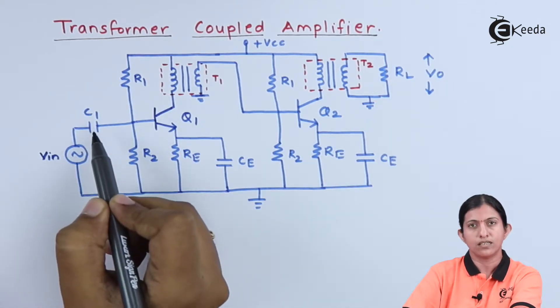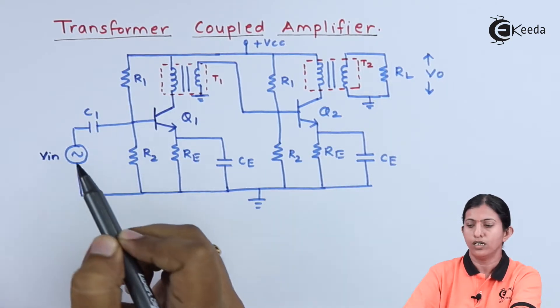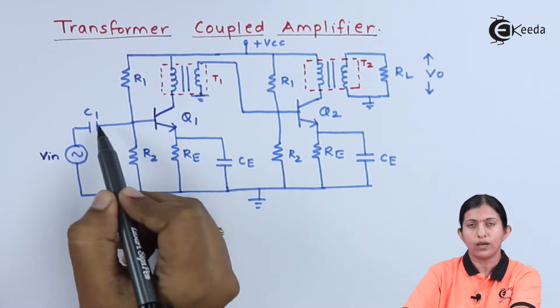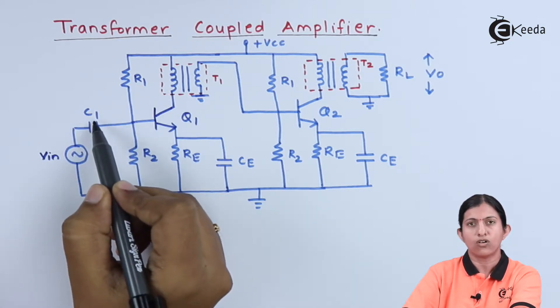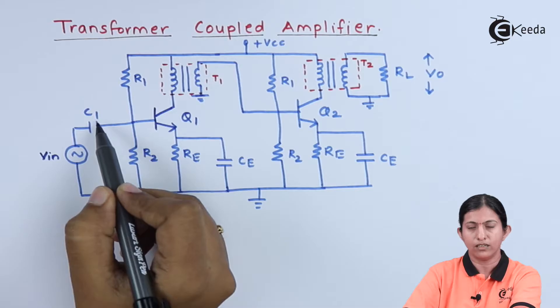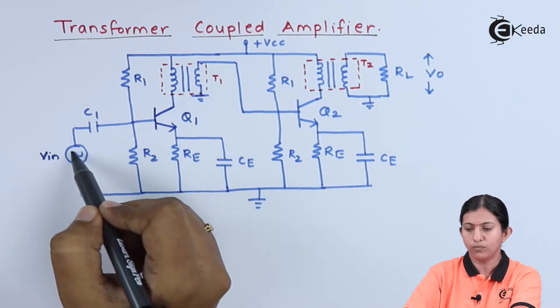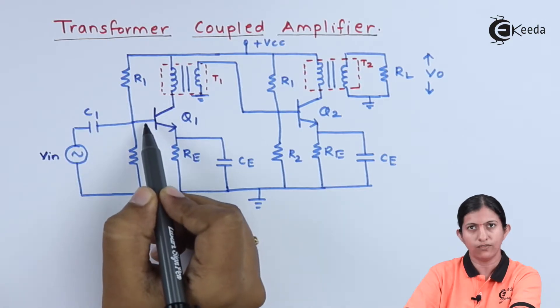We use capacitor C1 at the input. VIN is applied through capacitor C1. This C1 is called a coupling capacitor, which couples the input to the base of the first stage.